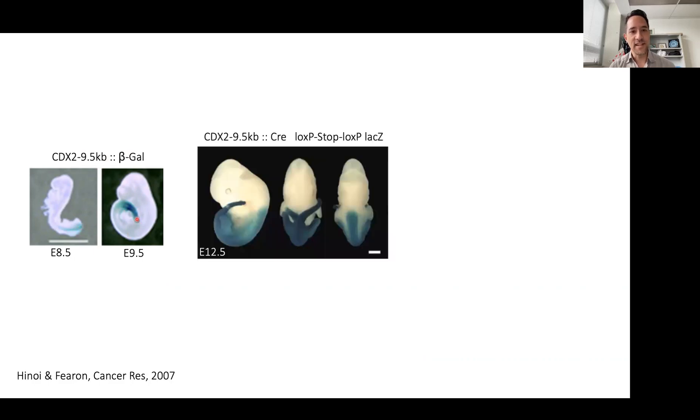But when they instead used the same promoter to drive a Cre in a loxP stop lacZ background, they had now permanently labeled many cells in the posterior half of the embryo. In this dorsal view you can see quite clearly that while the forebrain, midbrain, and hindbrain were never labeled,